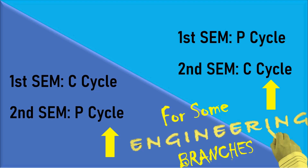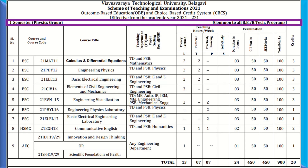Let us get into the scheme of the first semester and second semester and see what subjects are there in P-cycle and C-cycle. You can see this is the first semester Physics group subject scheme, effective from academic year 2021-22, and it is common to all engineering branches. The subjects listed are for students who get Physics cycle, that is P-cycle, in the first semester.